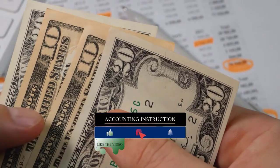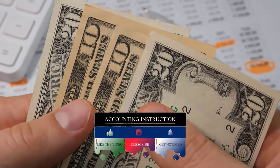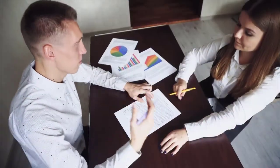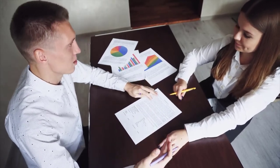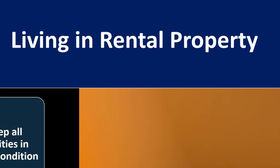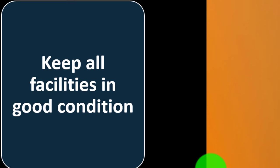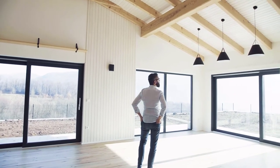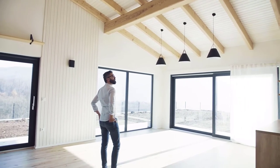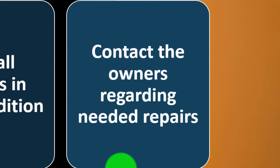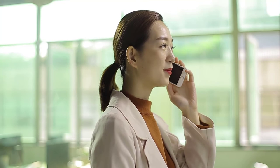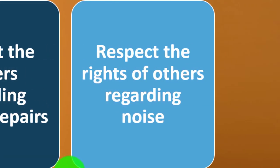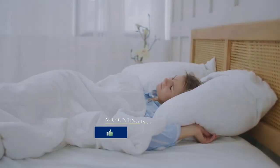Whenever you enter a partnership-type arrangement, it's best to clearly lay out the expectations upfront. You can also have co-signer situations with similar joint-responsibility issues that all parties need to be aware of. When living in rental property, keep all facilities in good condition — both to avoid damage to your deposit and to be respectful to others. Contact the owner regarding needed repairs, since one benefit of renting is that repairs may be handled by the landlord.